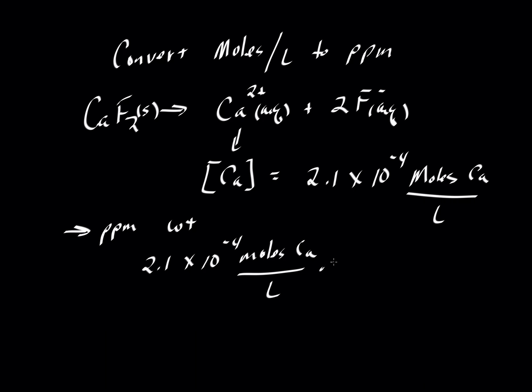And then we're going to multiply that by 40.078 grams of calcium per mole. So this is the atomic weight of calcium. It's 40.078 grams per mole of calcium. That will allow moles to cancel, leaving us grams. And if we do that calculation, then we get a value of 8.41 times 10 to the minus 3. And that is now grams of calcium per liter of solution.